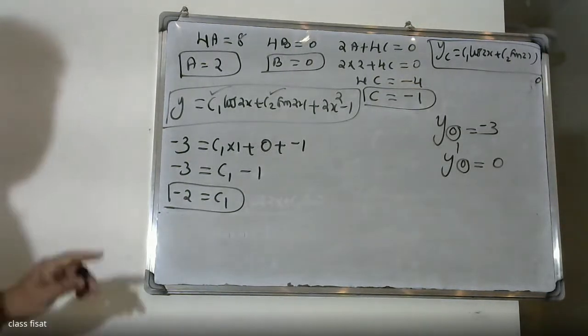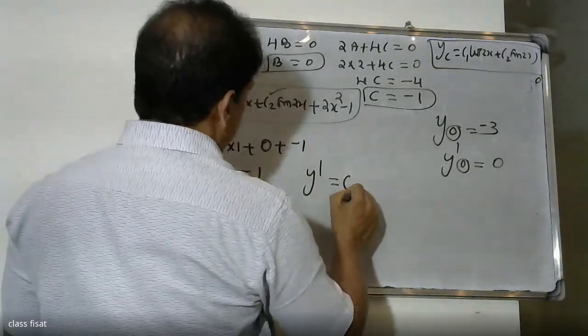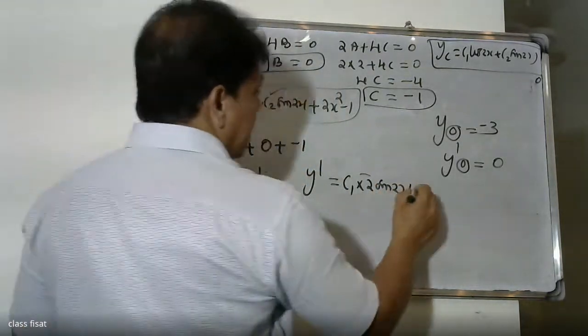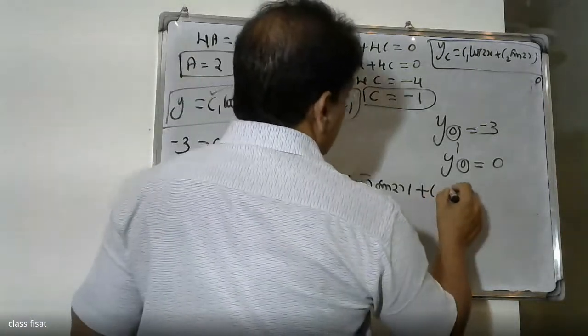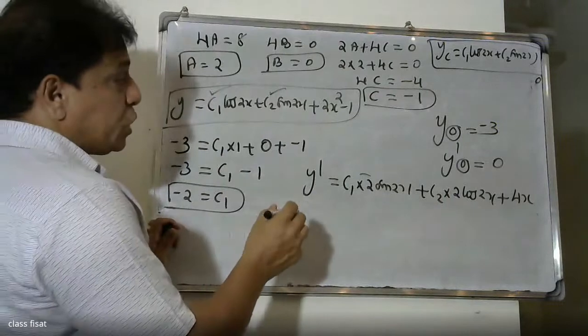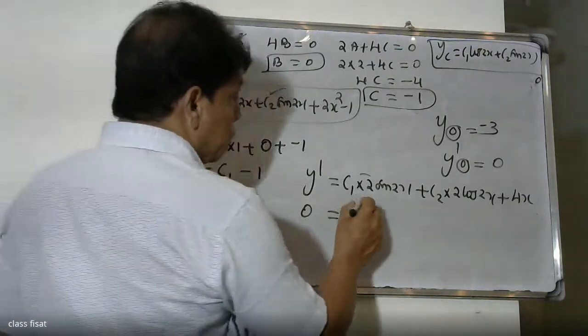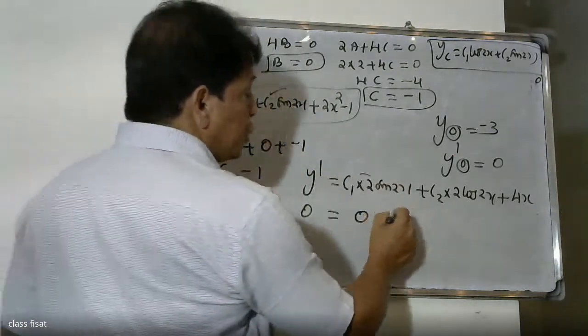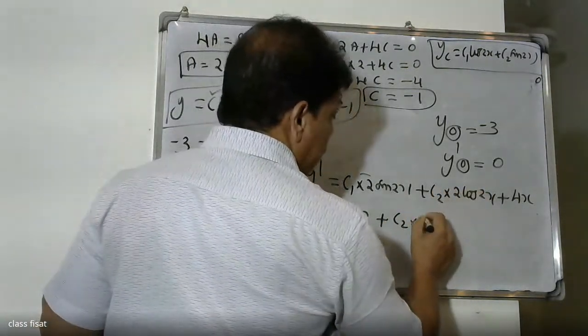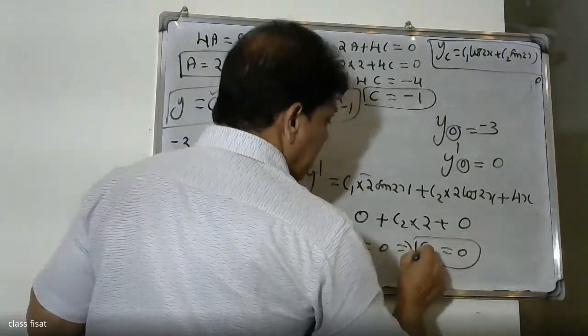For the second boundary condition, we need y' = -2c1·sin(2x) + 2c2·cos(2x) + 4x. The condition y'(0) = 0 gives: 0 = -2c1·sin(0) + 2c2·cos(0) + 0, so 0 = 2c2, therefore c2 = 0.